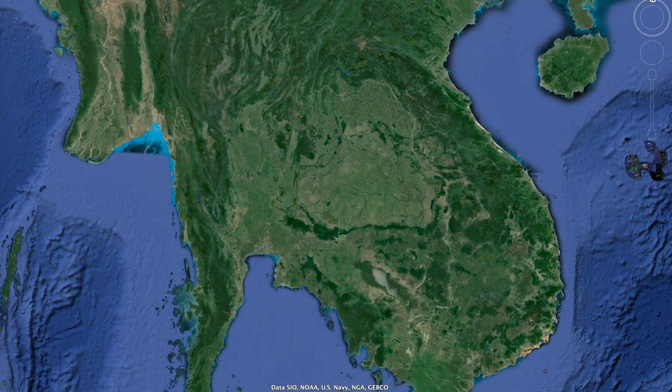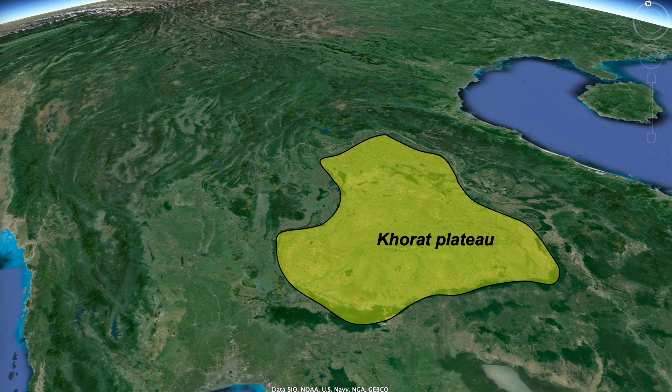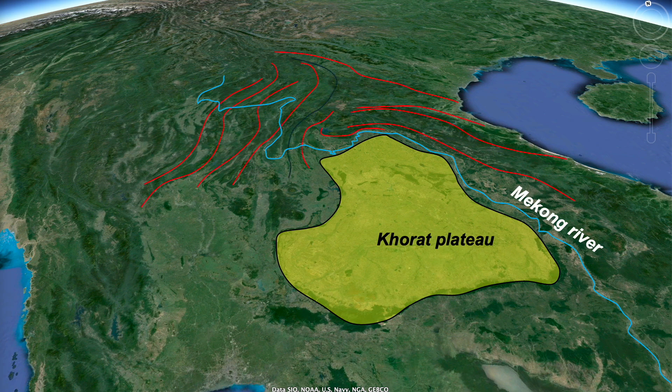So let's take a look at the Khorat Plateau. It's a bit of a misnomer. It's low ground compared to Tibet, only a couple hundred meters above sea level. But the elevations around the margin are enough to influence the course of the Mekong River and modern ranges' deformed crust appear to wrap around the plateau.